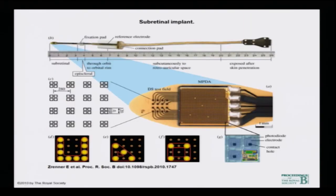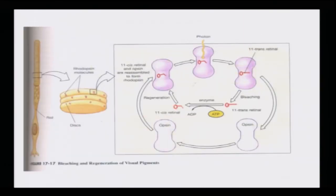These are all G-protein coupled systems. This is the summary of bleaching and regeneration of the visual pigment — it is getting regenerated again. The eleven-cis retinal is regenerated through an enzymatic process from trans to cis, and the cis form gets incorporated back into the opsin moiety and returns to the membrane.